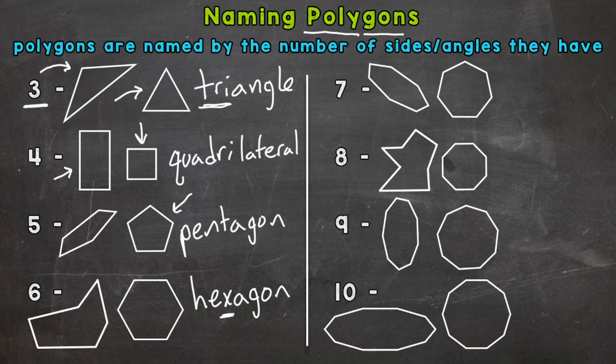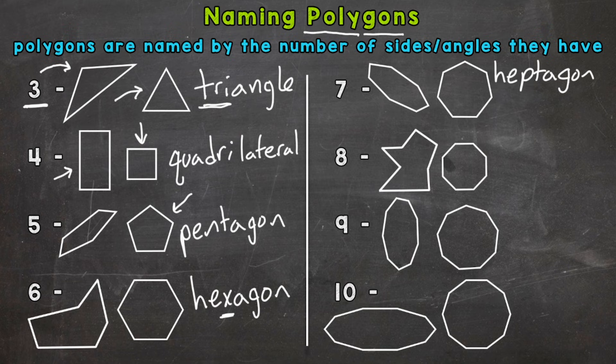On to seven sides and angles now, and this one actually has two names. You can either call it a heptagon or a septagon. I prefer septagon. I think that's easier to remember because septa here kind of sounds like seven. Seven starts with an S, and so does septagon.